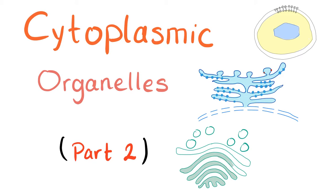Hey guys, this is Metacosis Perfectionalis. Thank you for watching. This is my second part on cytoplasmic organelles. In the previous video, we talked about the mitochondria and lysosomes. Today, let's talk about endoplasmic reticulum, the Golgi apparatus, and peroxisomes. Let's get started.